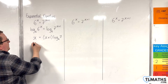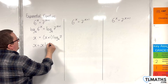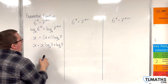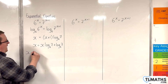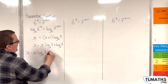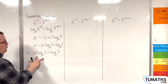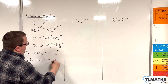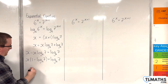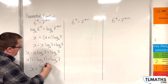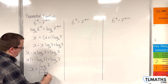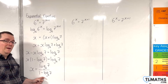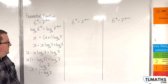Now I'm going to expand the bracket out, so x equals x log base 6 of 7 plus log base 6 of 7. I'm going to move that x log base 6 of 7 term over to the left-hand side, so x minus x log base 6 of 7 equals log base 6 of 7. Factorise the left-hand side, then divide through by the bracket. So x equals log base 6 of 7 divided by 1 minus log base 6 of 7. That's using base 6.